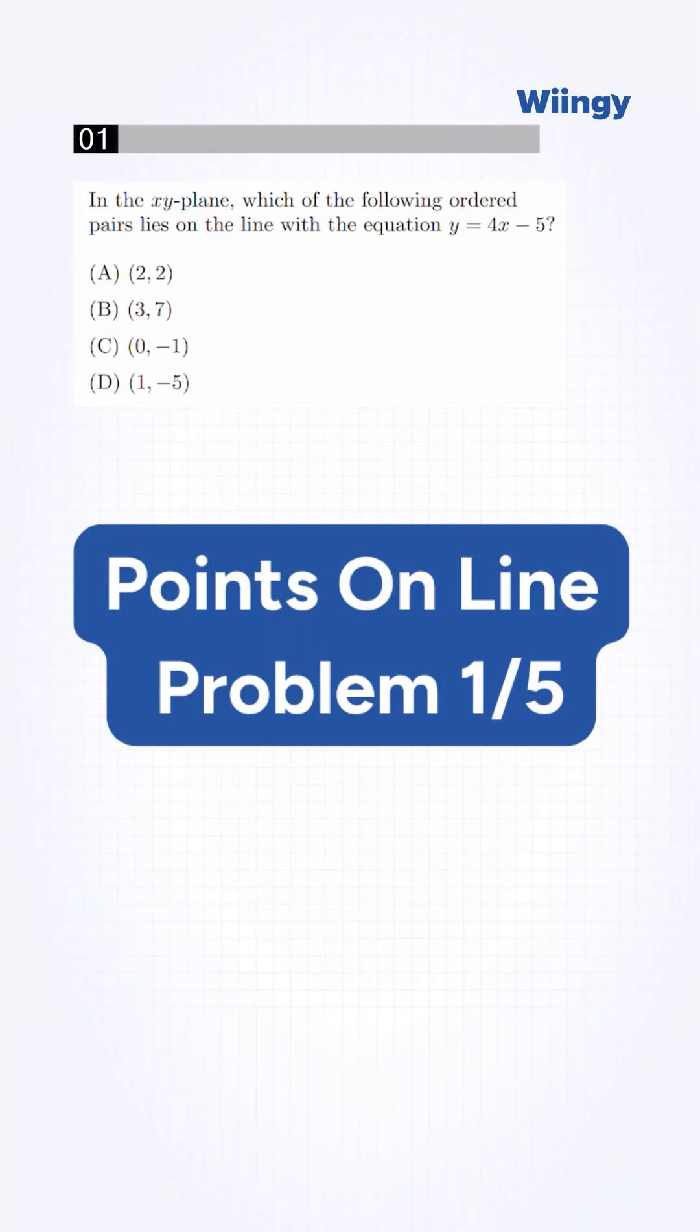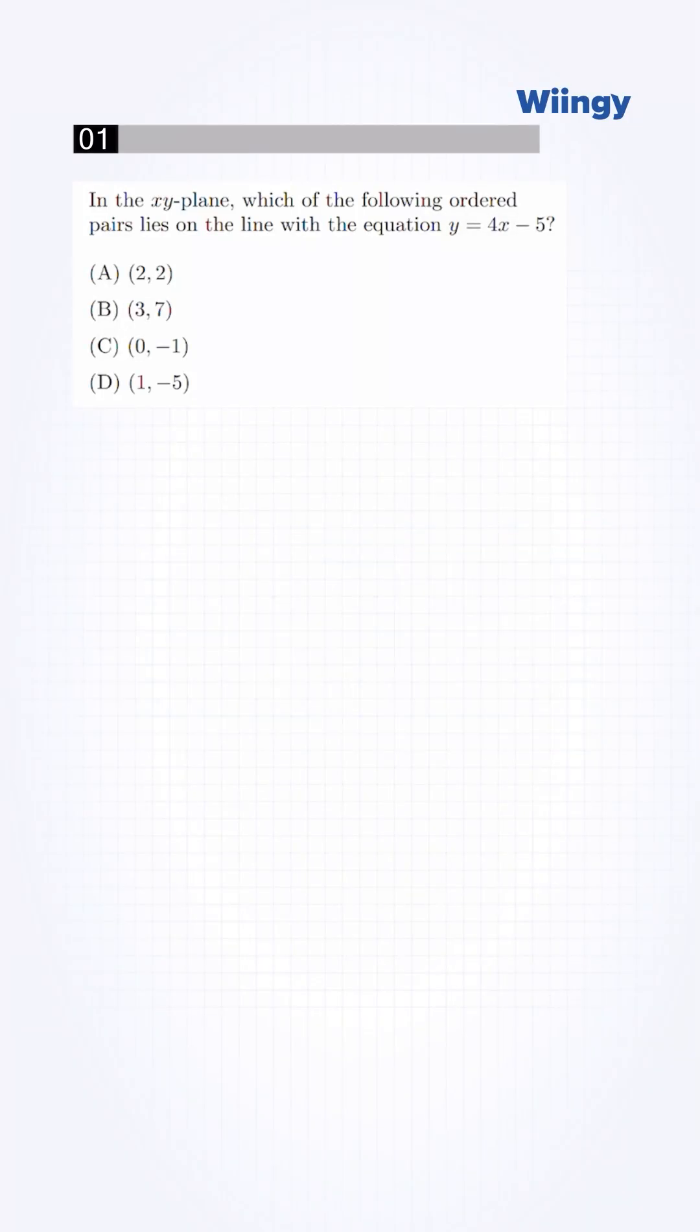Can you catch the correct point on this line in under 30 seconds? The question says, which of the following ordered pairs lies on the line with the equation y = 4x - 5?